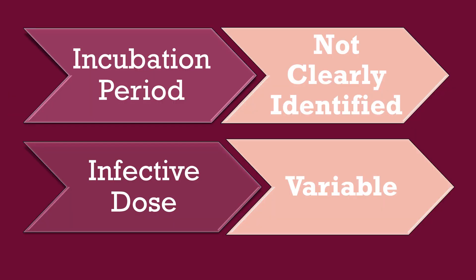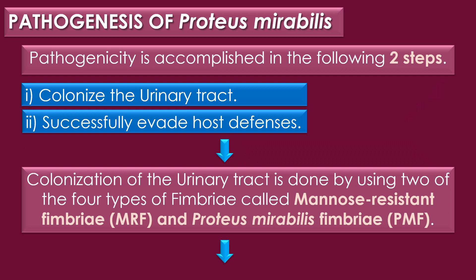The incubation period of Proteus mirabilis infection is not clearly identified, and the infective dose required for causing infection is variable. Pathogenesis of Proteus mirabilis is accomplished in two steps: first, Proteus mirabilis needs to colonize the urinary tract; second, it needs to successfully avoid the host defenses. Colonization of the urinary tract is done by two of the four types of fimbriae, called MR/F (mannose-resistant fimbriae) and PMF (Proteus mirabilis fimbriae).